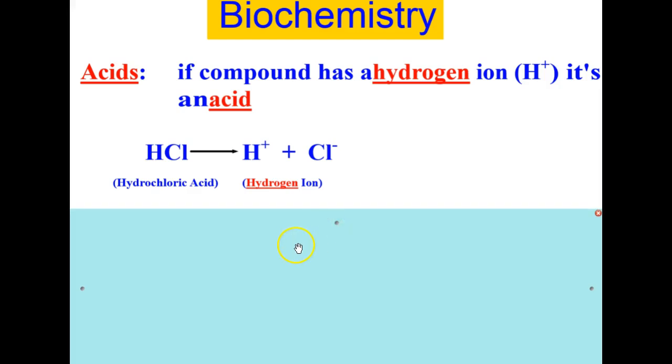Hydrochloric acid takes the hydrogen ion, H+, and combines with chlorine, which is Cl minus, and together they produce HCl, which is hydrochloric acid.